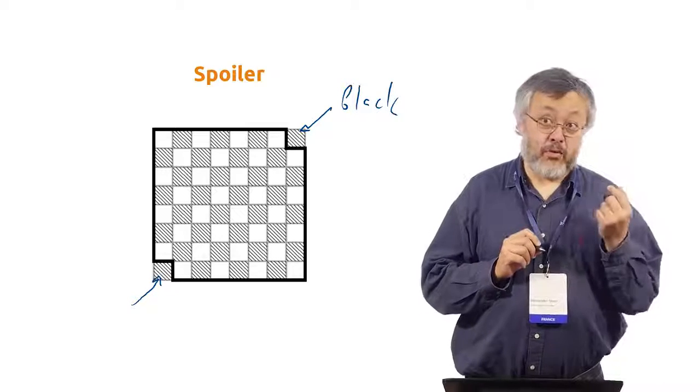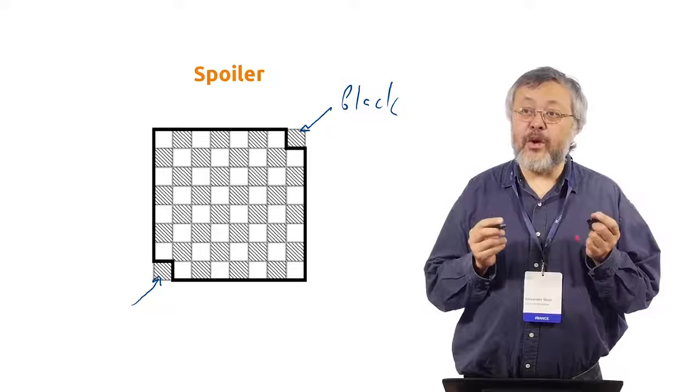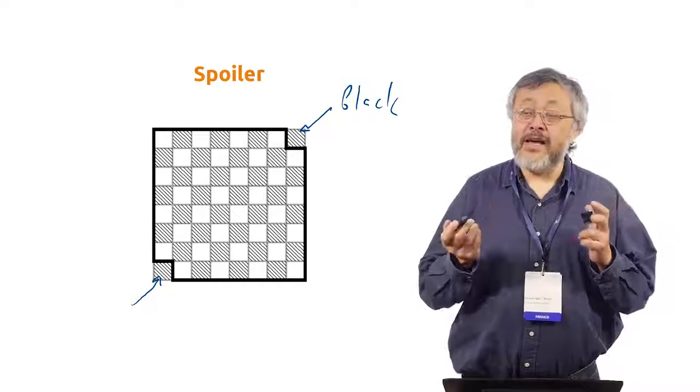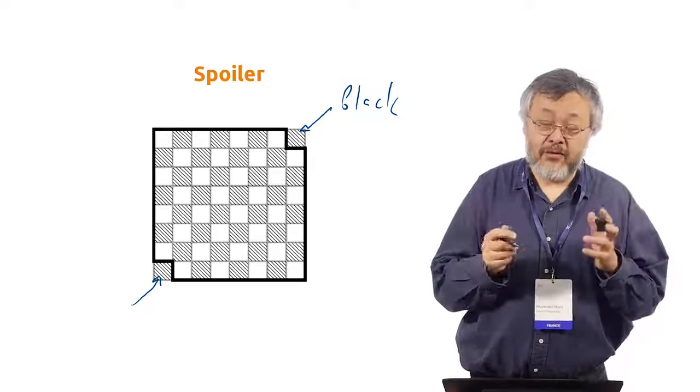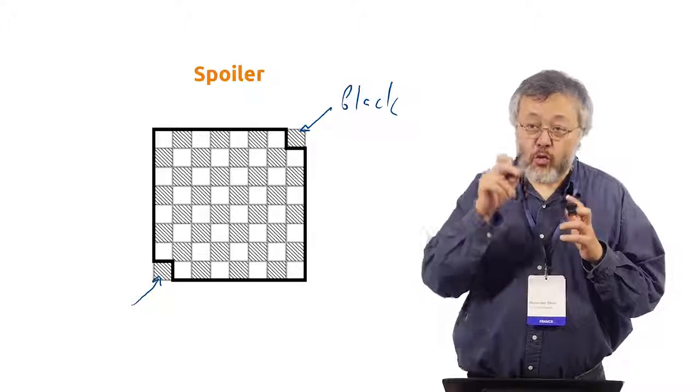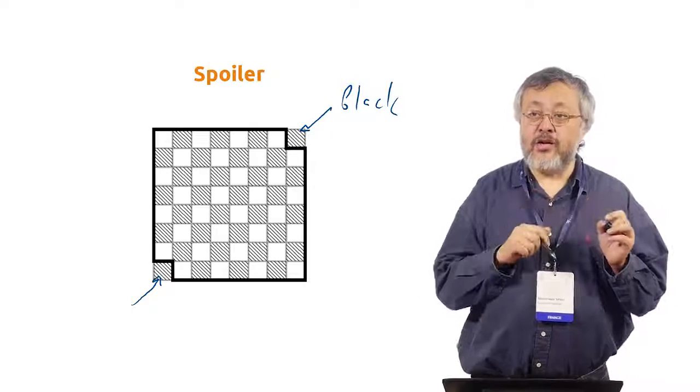And why is this important? Because originally we have 64 cells and 32 of them were black and 32 white. They were just four in each, black and four white in each row and in each column.